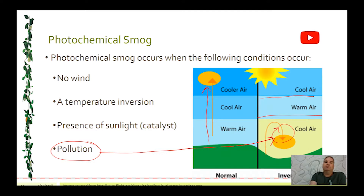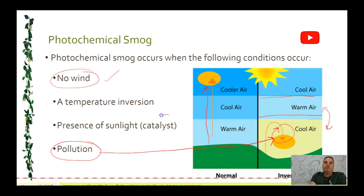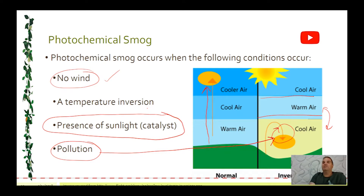It's really important that there is no wind, because wind would cause the air to mix and dissipate the pollution, preventing photochemical smog. We also need sunlight — sunlight is actually a catalyst, which is why it's called photochemical. It's a chemical reaction that relies on the presence of light, which helps speed up the reactions. So all four of these conditions must be present.